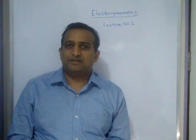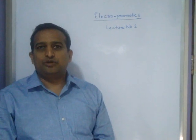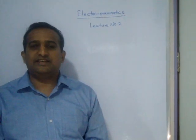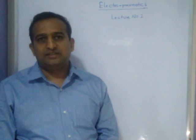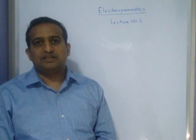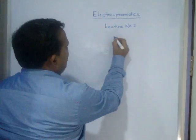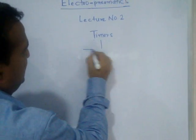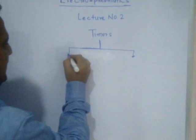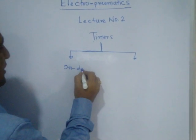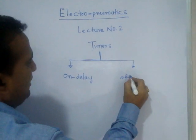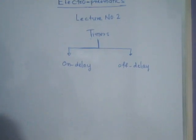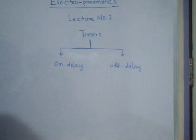Hello, this is lecture number 2 on Electro-Pneumatics. In this lecture, we will see the first timers: on-delay timer and off-delay timer. Then we will take one specific problem. There are two types of timers used in Electro-Pneumatics: the first is called on-delay timer, and the second is called off-delay timer.